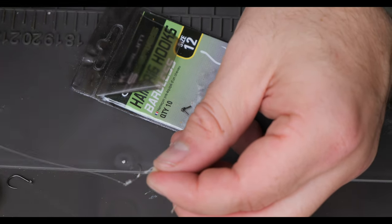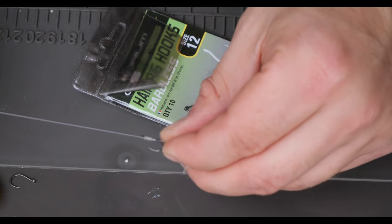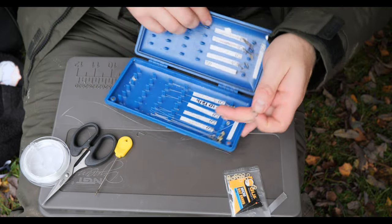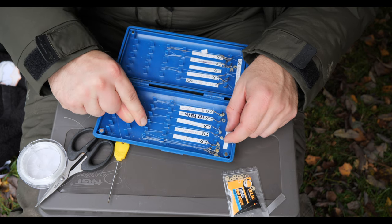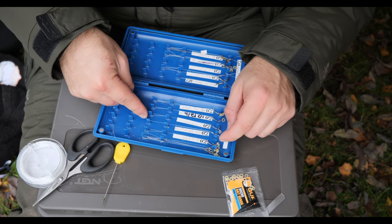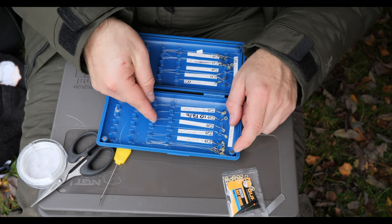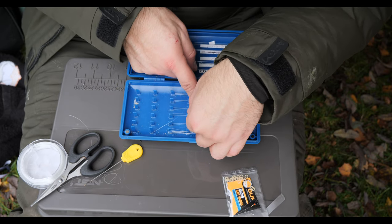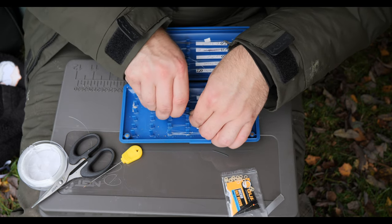So that's where we're at. That's the rig pretty much tied. One last little tip: if you take your case for your hook links, hook the hook over one of the pillars, measure it out to the size that you want your hook links. I think this is three inch. Then bring it back around, pin it with your fingers there, and then lift it off the rig case.